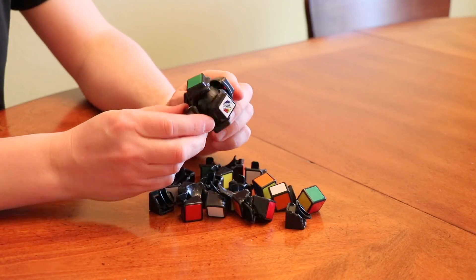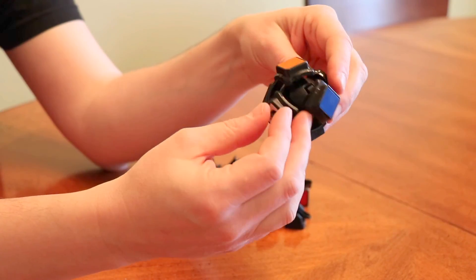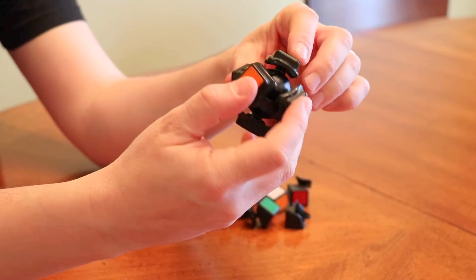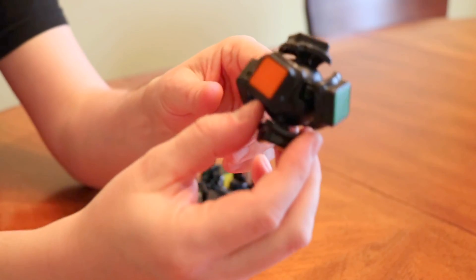And this is what's inside of the Rubik's Cube. So there's just like this ball, and those sides are attached to this ball, as you can see right here.